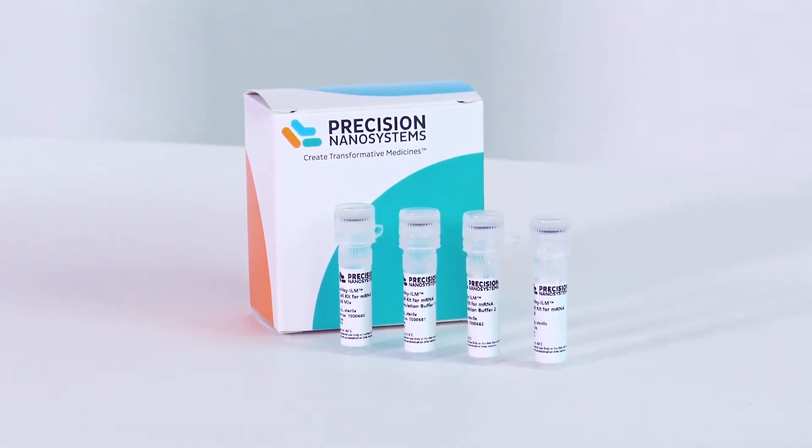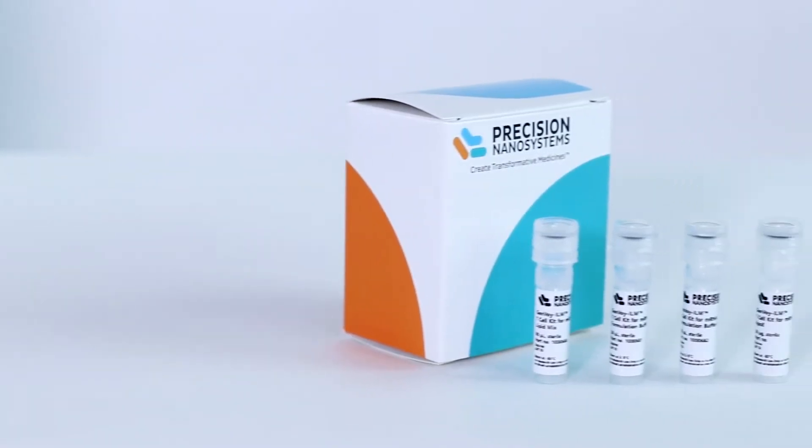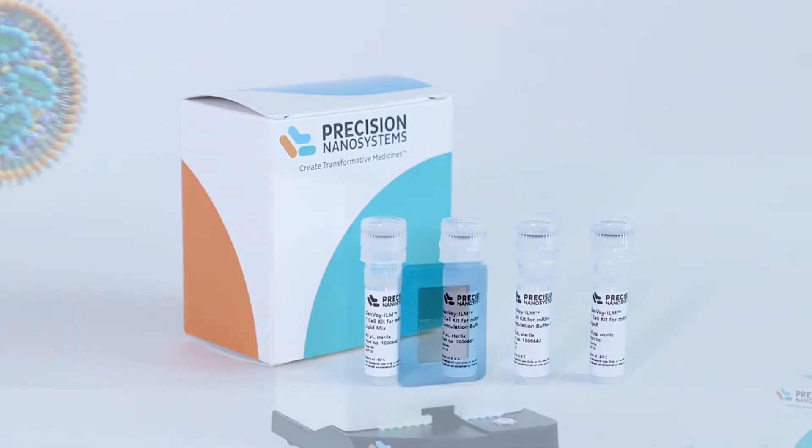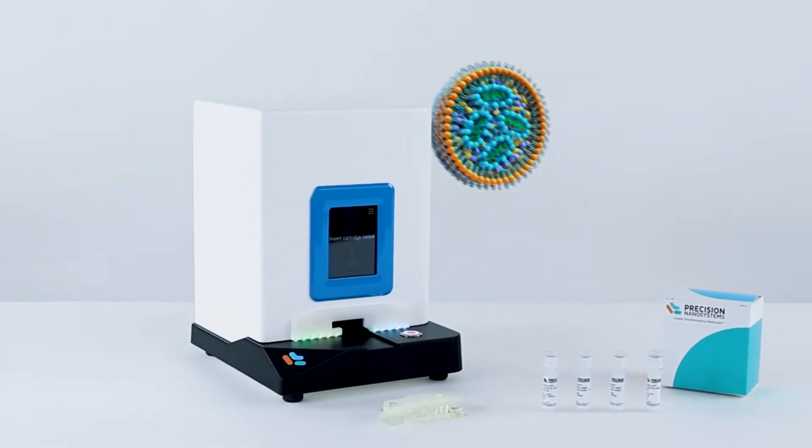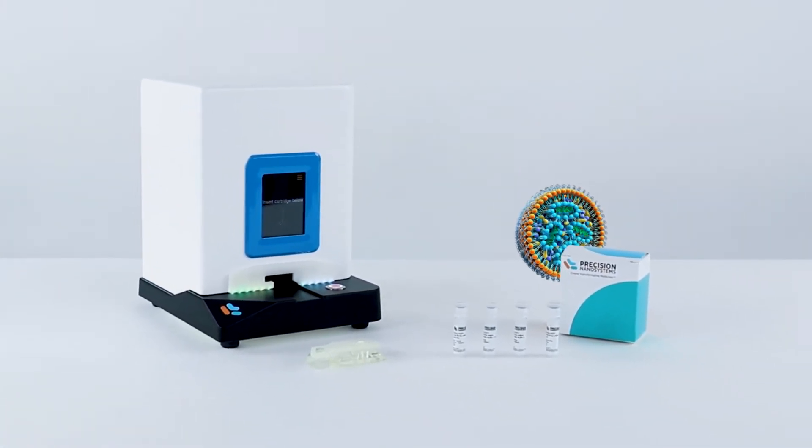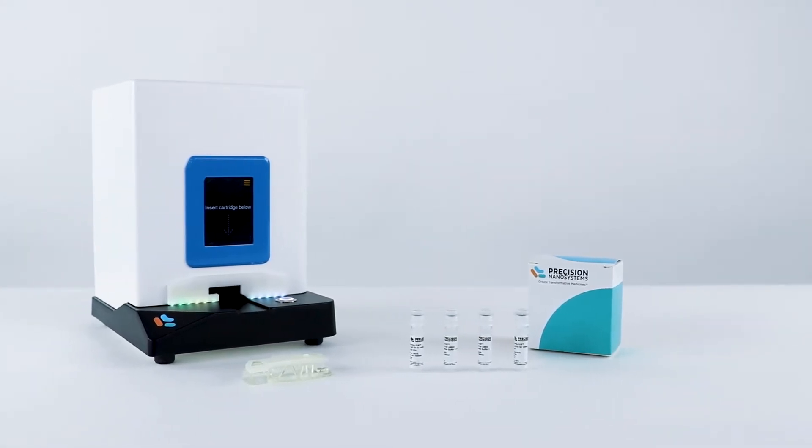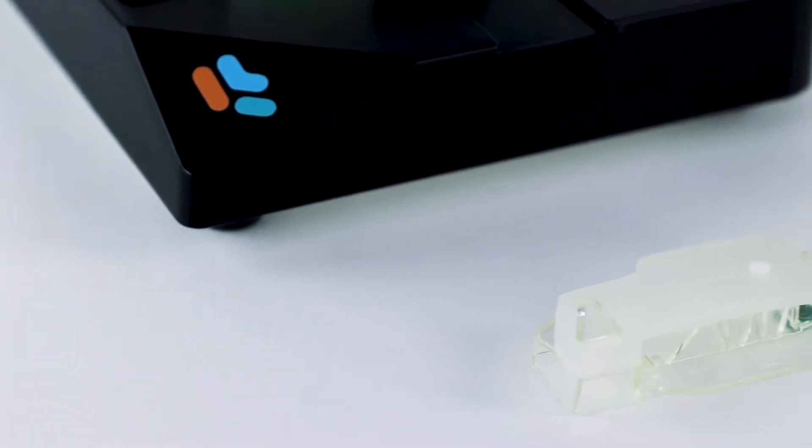Genvoi ILM T-Cell Kit for mRNA is a lipid nanoparticle or LNP reagent mix optimized for the delivery of messenger RNA into activated human primary T-cells using LNPs prepared on the NanoAssembler SPARK instrument with SPARK cartridges.